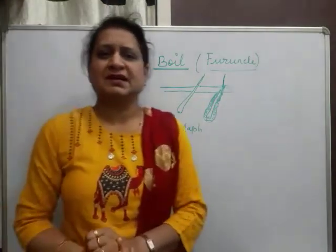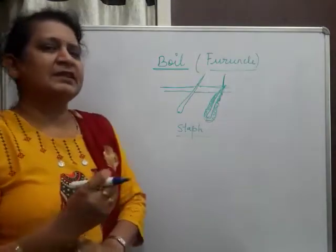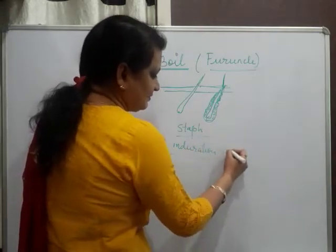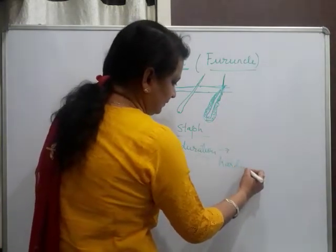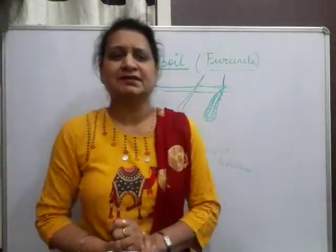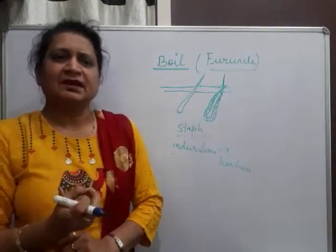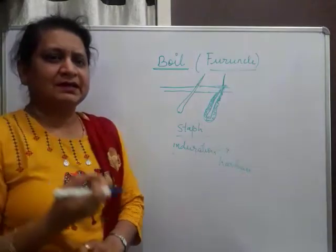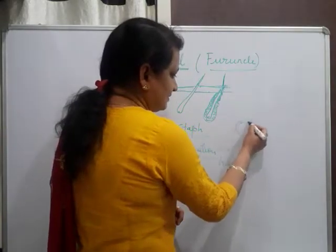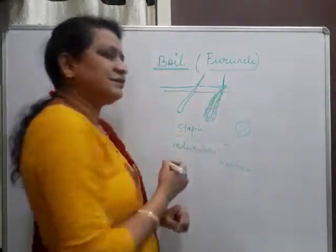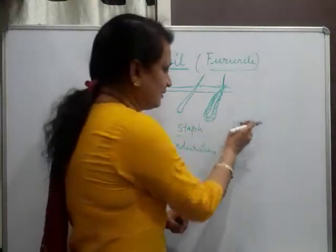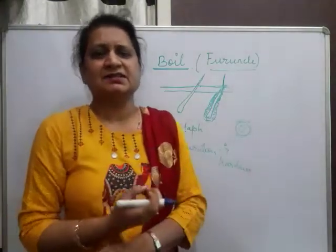This condition usually starts as a small painful swelling with induration. Induration means hardness — if you palpate it, it is hard. So it starts as a small painful swelling in which induration occurs. Later on it becomes soft at the center. This is hard — that is indurated — then it becomes soft in the center and a yellow colored pustule appears on the top of the swelling.